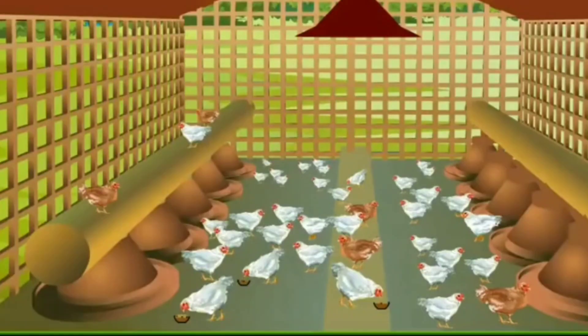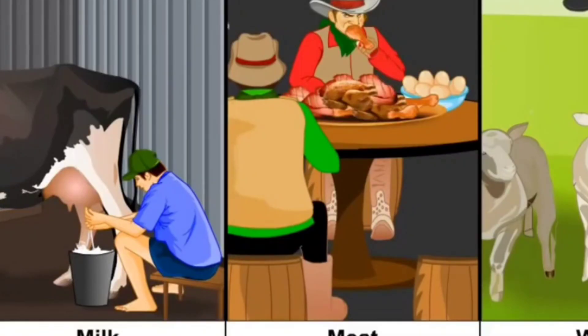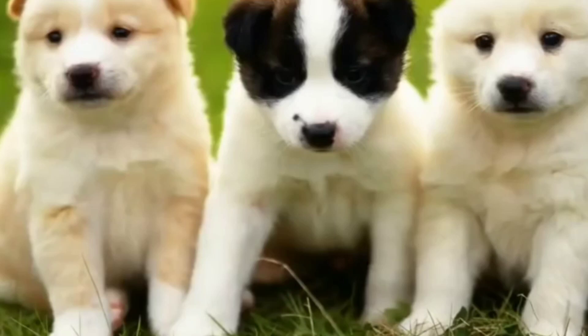People feed and tend them. Some domestic animals give us milk, meat and wool. Some domestic animals are kept as pets.